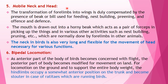The fifth morphological adaptation is a mobile neck and head. The transformation of forelimbs into wings is compensated by the presence of a beak or bill, used for feeding, nest building, preening, and defense. The mouth is drawn out into a horny beak which acts as a pair of forceps for picking up food and for various other activities such as nest building and preening, normally done by forelimbs in other animals. The neck in birds is also very long and flexible for movement of the head necessary for various functions.